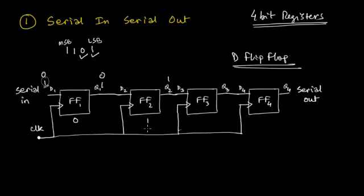After two more clock pulses, you'll find flip-flop 1 storing the MSB — that is 1 — flip-flop 2 storing the next bit, 0 stored in flip-flop 3, and the LSB — that is 1 — stored in flip-flop 4. This is how the data gets stored in this register.